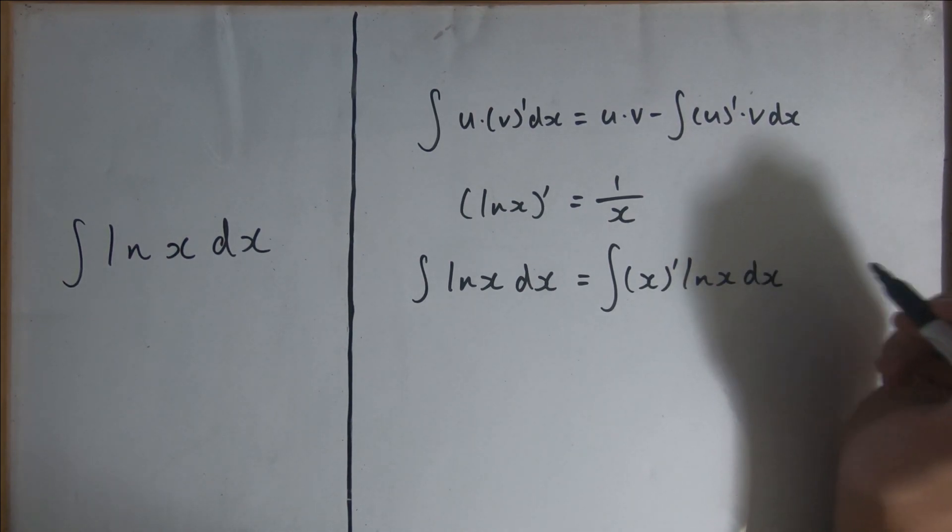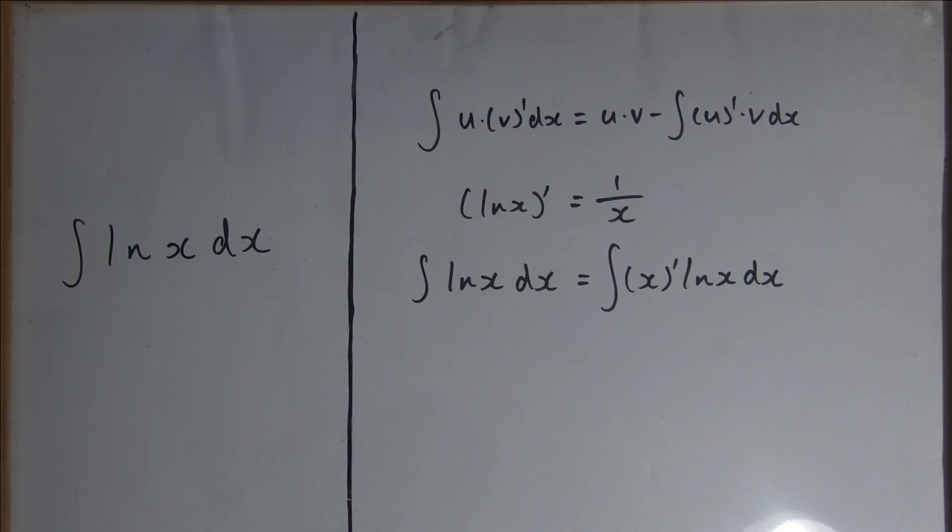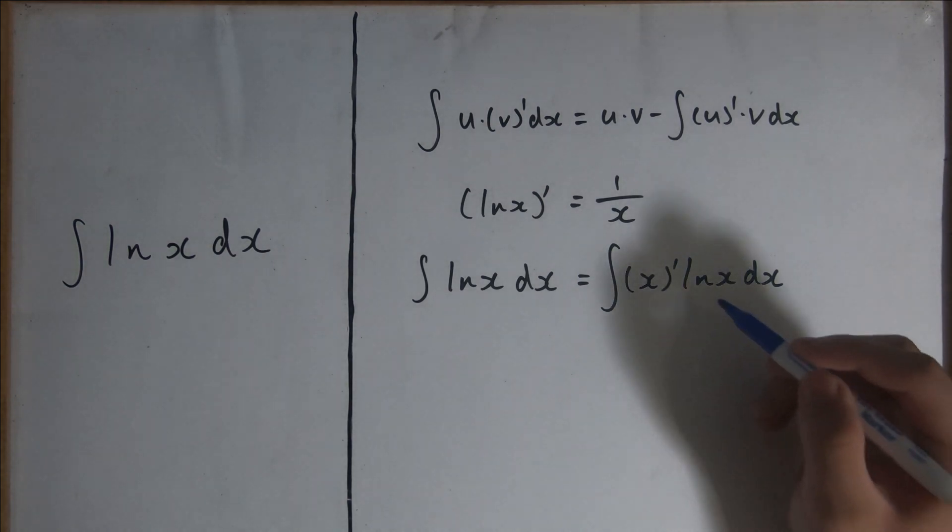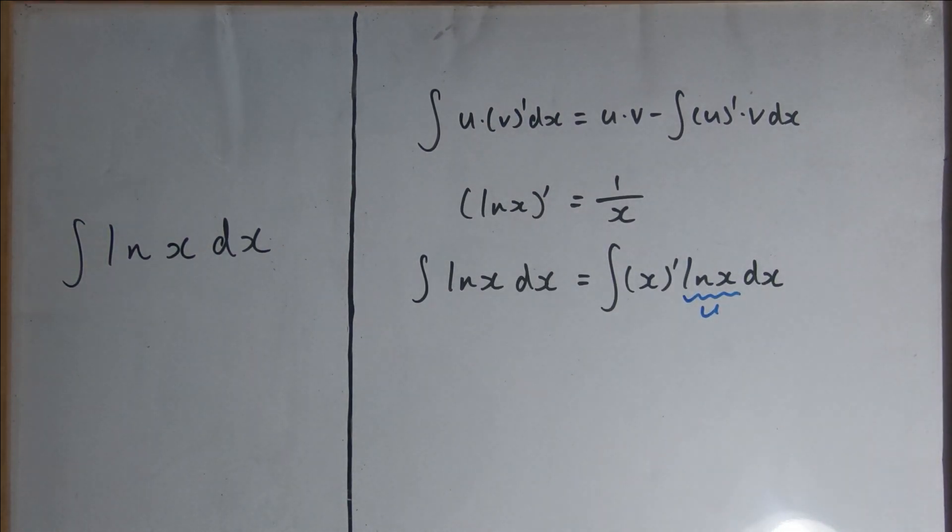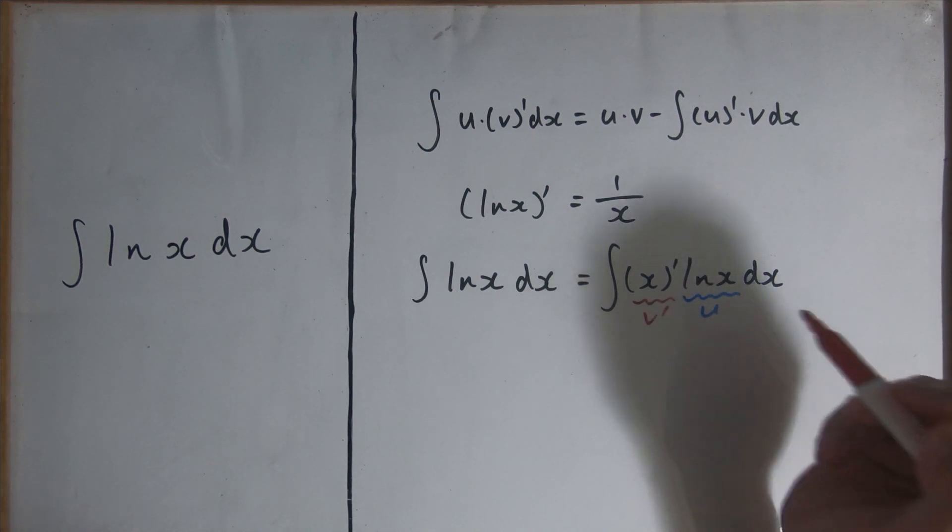This is in the form u times v dash, where ln(x) is u and x prime is v dash.